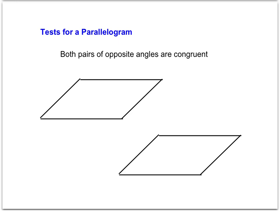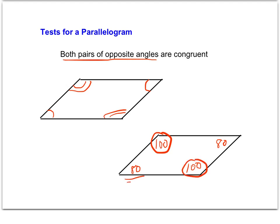The next test also has two cases: when we're talking about opposite angles being congruent, we can just be shown congruency marks, and that's enough to say it is a parallelogram. Or if we don't have congruency marks but have detailed angle information, we can still confirm those opposite angles are congruent. So in either situation, if both pairs of opposite angles are congruent, then it is a parallelogram.